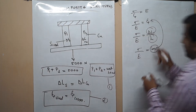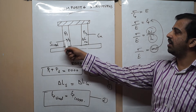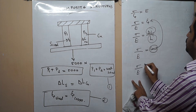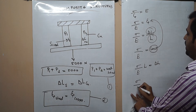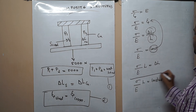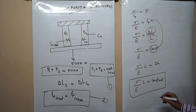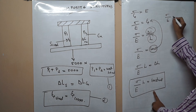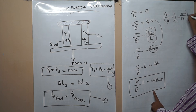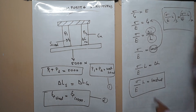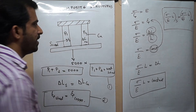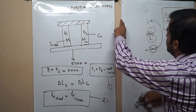If the length is not constant — that is, the steel rod and copper rod are of different lengths — then we use sigma divided by E into L equals delta L, which is a constant. In that case we write: sigma_S divided by E_S into L_S equals sigma_C divided by E_C into L_C. This is the inference to use when the lengths of steel and copper are different.